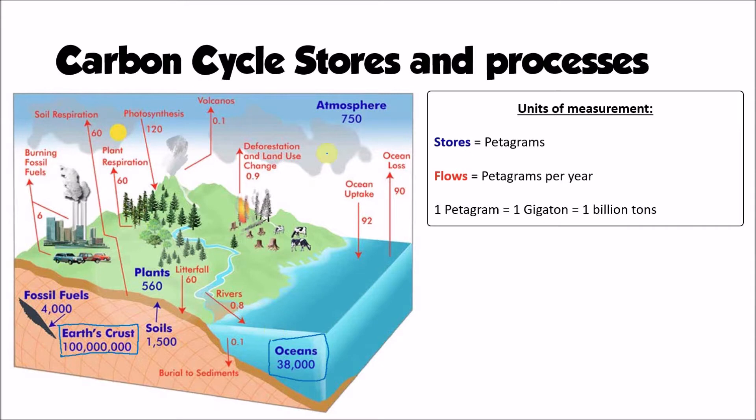Another significant store is fossil fuels. So fossil fuels make up about 4,000 petagrams of carbon. Now these fossil fuels have been formed over millions of years by the burial and compaction of organic matter, and over time that organic matter, whether that's plant or animal material, has been compressed to form coal or oil or natural gas, and as we'll see they are being returned to the atmosphere through the combustion of those fossil fuels.